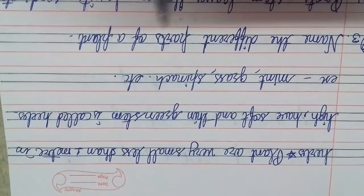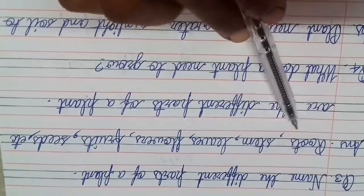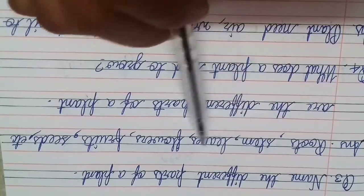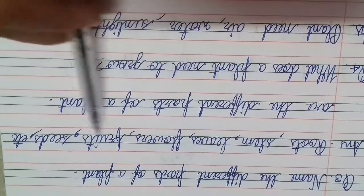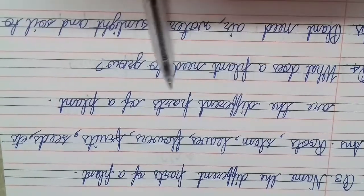Question three: Name the different parts of plants. Roots, stem, leaves, flowers, fruits, seeds, etc. are the different parts of a plant.